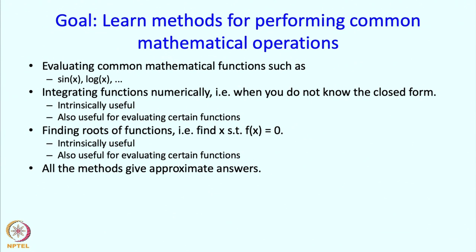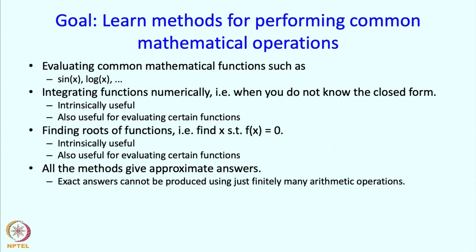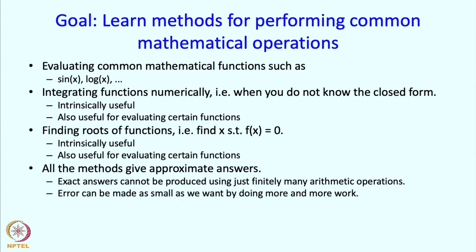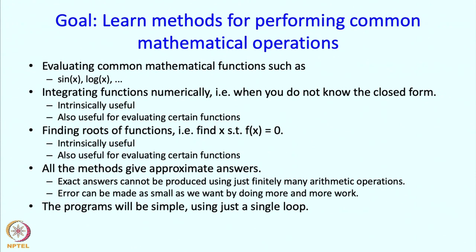All these problems have methods which will give approximate answers. Exact answers are generally not possible, meaning exact answers using a finite number of arithmetic operations. However, the methods we describe will have the property that by doing more and more work we can reduce the error as much as we want. There will be some kind of trade-off. On the other hand, the programs we will write will be extremely simple — just one loop and maybe 2-3 variables — making them good problems for developing and practicing your programming skills.